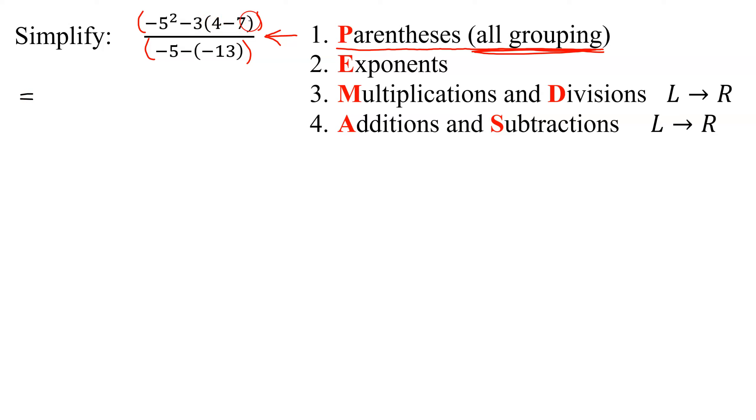So the first thing I'm going to do is my 4 minus 7. So I'm going to get negative 5 squared minus 3 times, and what's 4 minus 7? It is negative 3.